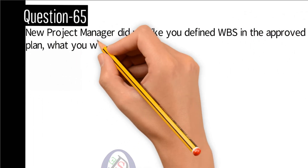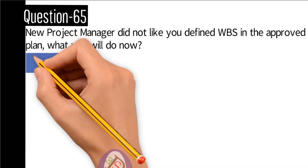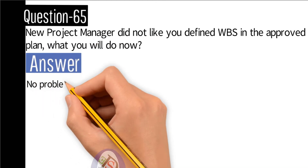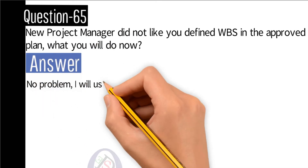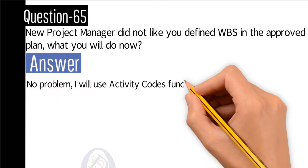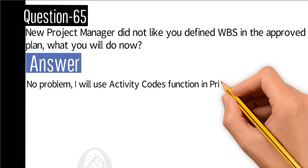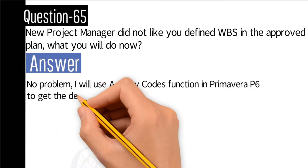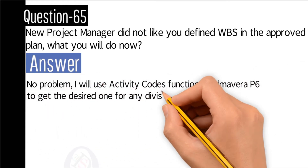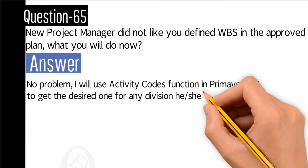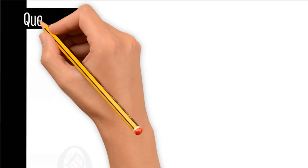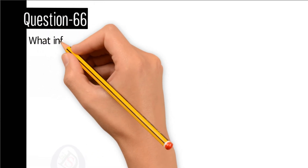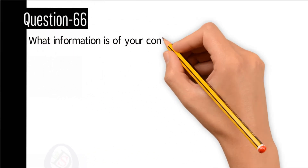Question number 65: A new project manager did not like the WBS you defined in the approved plan — what will you do? Answer: No problem. I will use the activity code function in Primavera P6 to get the desired division that he or she prefers.